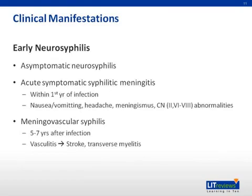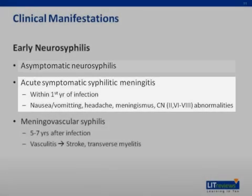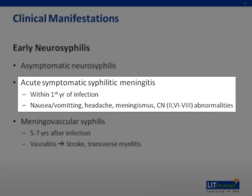In early neurosyphilis, the clinical manifestations can be variable. In asymptomatic neurosyphilis, there is an absence of neurologic signs or symptoms; however, the spinal fluid is abnormal and shows a mild lymphocytic or mononuclear pleocytosis, elevated protein, and a reactive VDRL. Acute symptomatic syphilitic meningitis and ocular syphilis usually occur within the first year of infection but can also occur years later. The most common symptoms include nausea, vomiting, headache, neck stiffness, and cranial nerve abnormalities. The spinal fluid shows an elevated opening pressure, lymphocytic pleocytosis, elevated protein, lower normal glucose, and a positive VDRL.